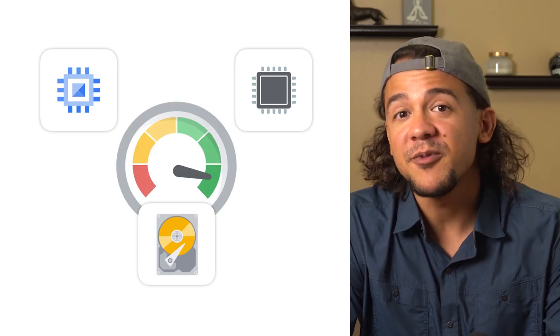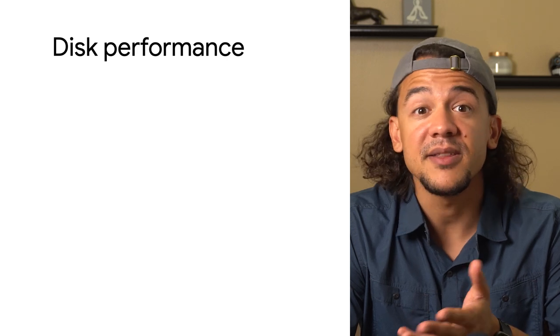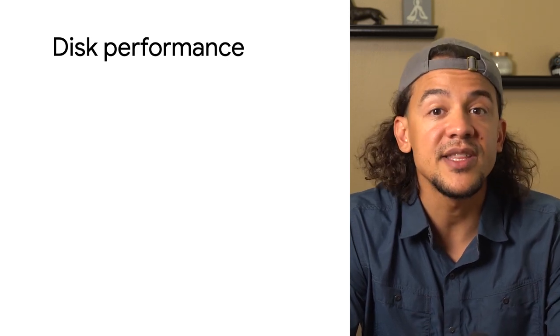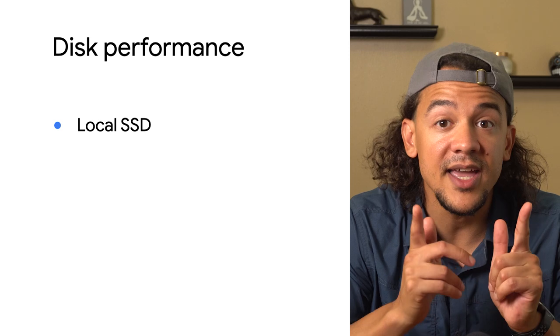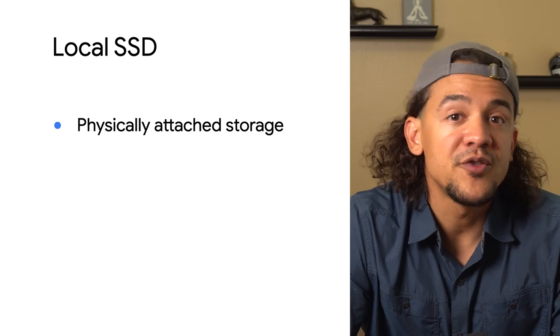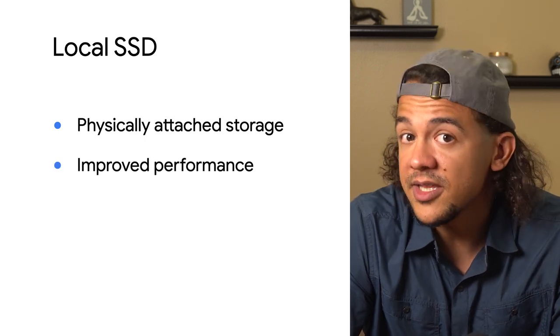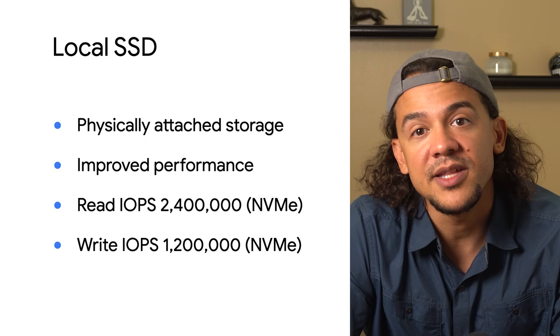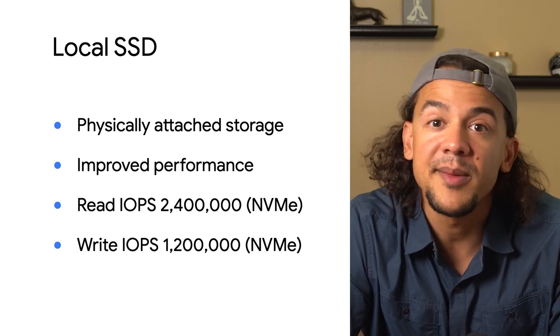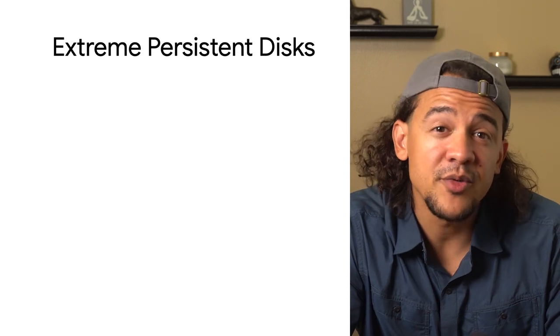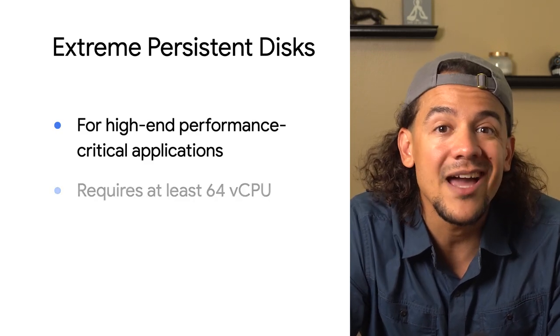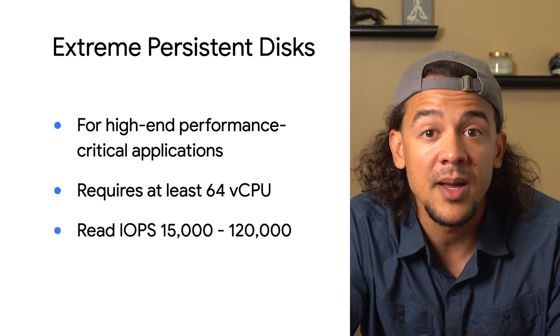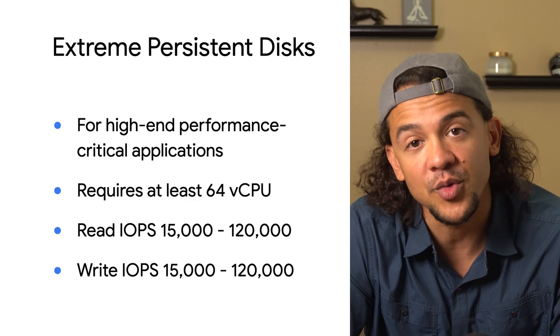Besides CPU and memory, another performance metric to consider is disk performance. If your application needs the best disk IOPS, you'll want an instance type compatible with one of two high-performance disk solutions: local SSDs and extreme persistent disks. Local SSDs are physically attached to the server hosting your VM, offering higher throughput and lower latency than standard persistent disks — they provide ephemeral local block storage great for processing space, buffers, caches, and temporary data. Extreme persistent disks offer higher maximum IOPS and throughput, but require at least 64 virtual CPUs.